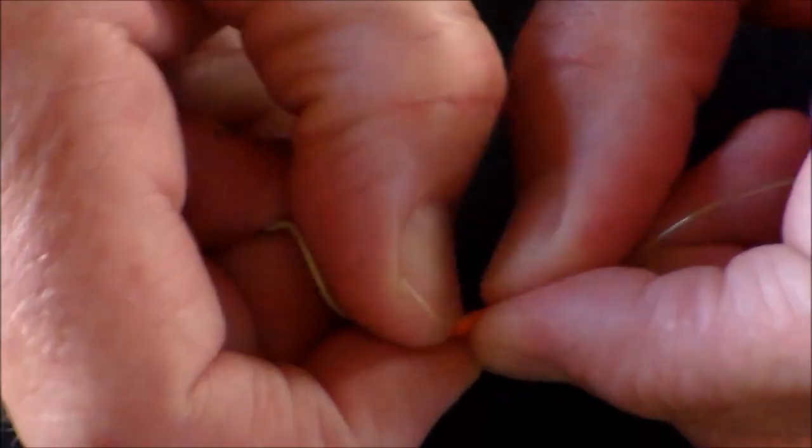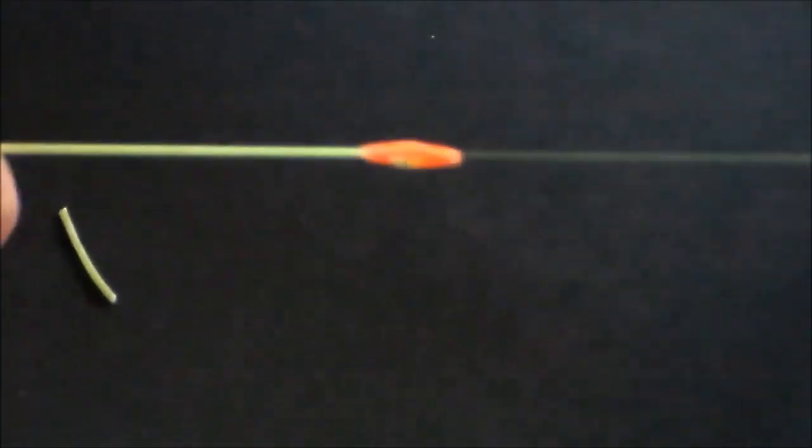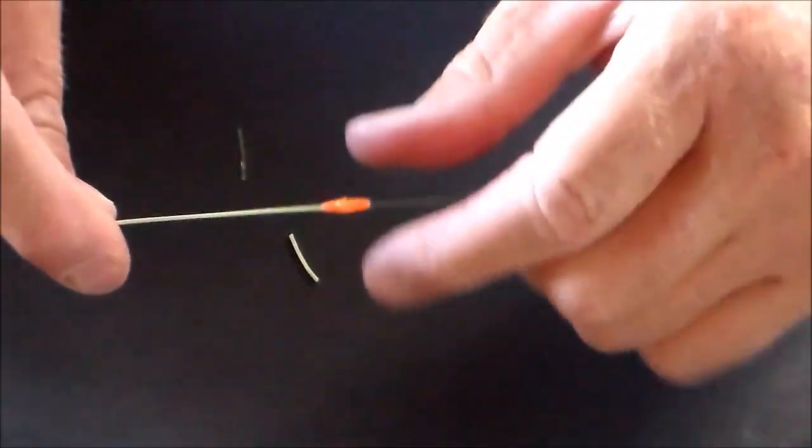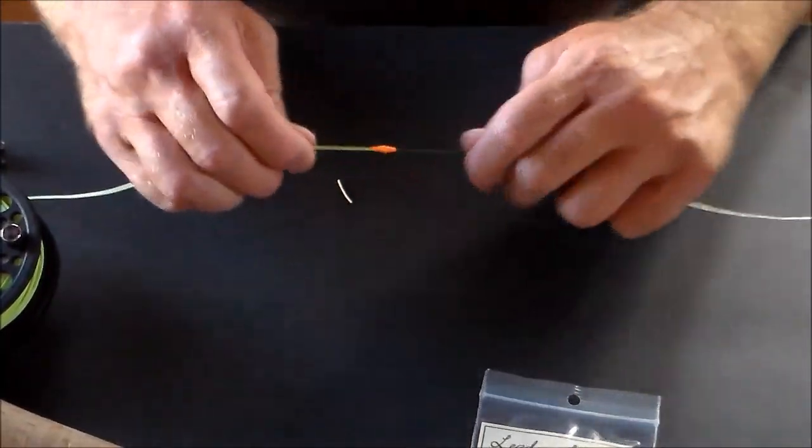It's easier if you do the leader knot first. Use your thumbnail to get it in. As you see, the knots are encased in the slot. They don't move around. That's part of the security of this method.